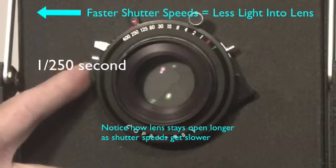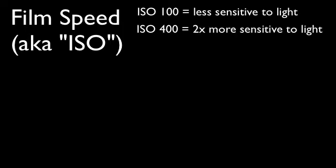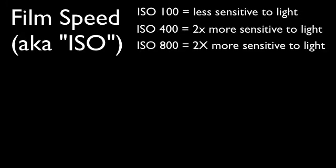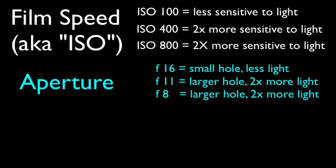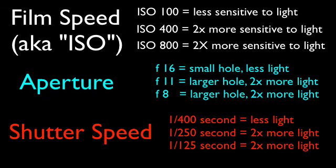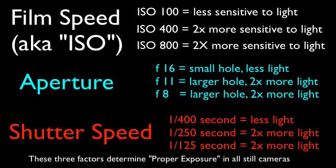There's a third factor which determines proper exposure, and that is called film speed, or ISO. ISO refers to how sensitive the medium is you're using to capture your photos. ISO is designated by numbers, such as ISO 100 or ISO 800. The higher the ISO number, the more light sensitive the medium, whether it be film or digital image sensors. Once you've set the ISO number, a light meter inside the camera can compute the correct relationship between aperture and shutter speed to render proper exposure. For more about exposure, see lesson 10.